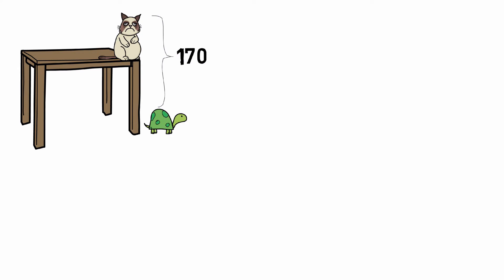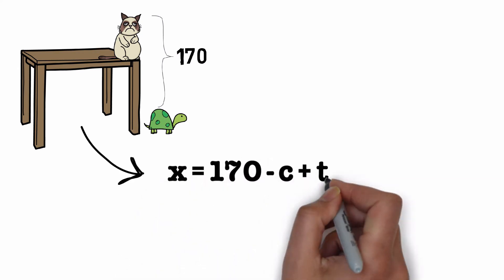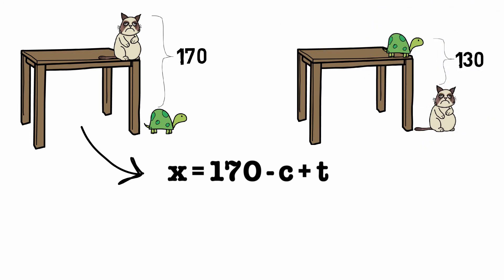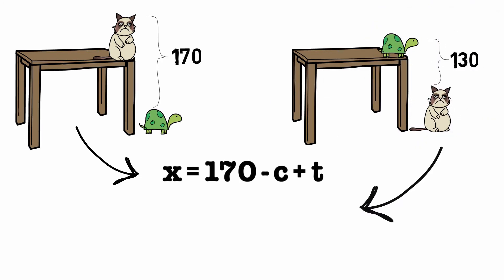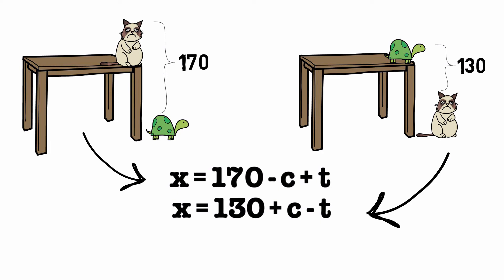Okay, now looking at this left image we can say X is equal to 170 minus C plus T, and looking at this right image we can say X is equal to 130 minus T plus C. Now since these two are equations, we can add the values on both sides.